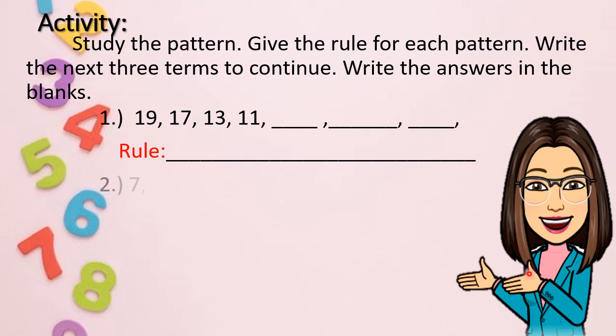For number 2, you have 7, 12, 17, 22, 27. And what are the next three terms? And what is the rule?